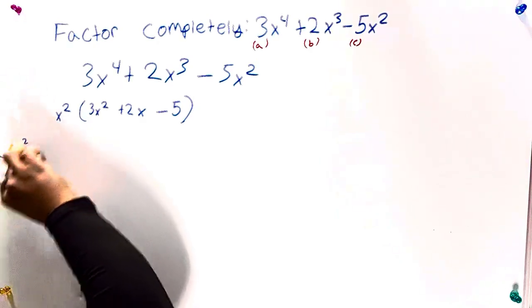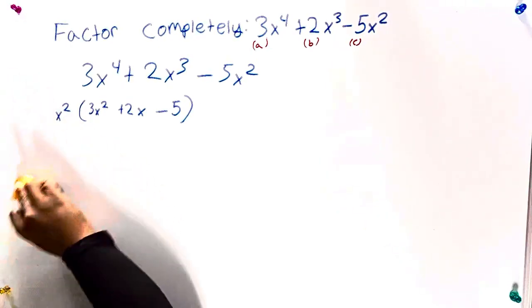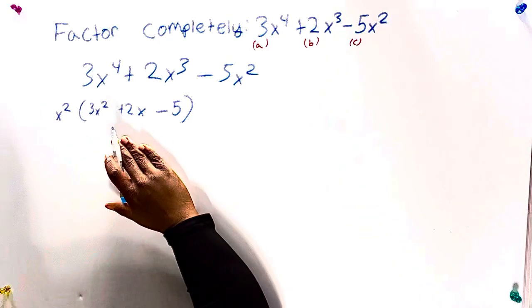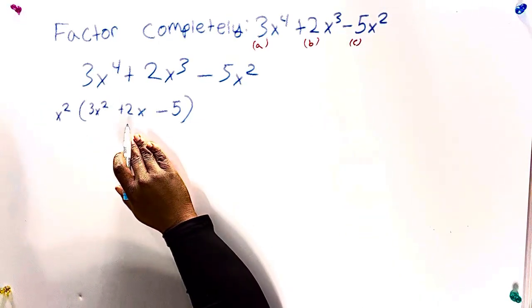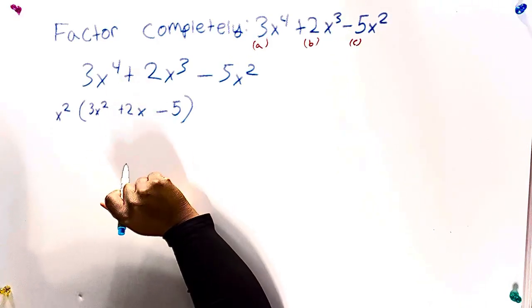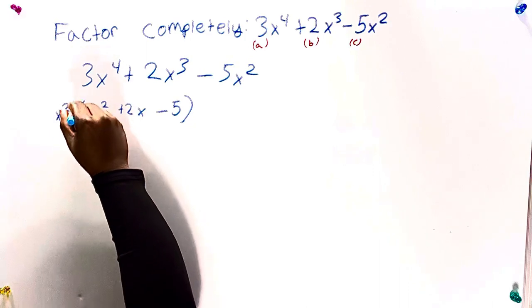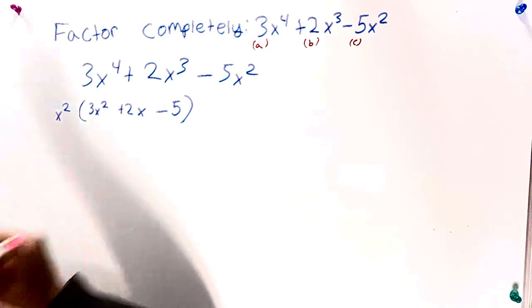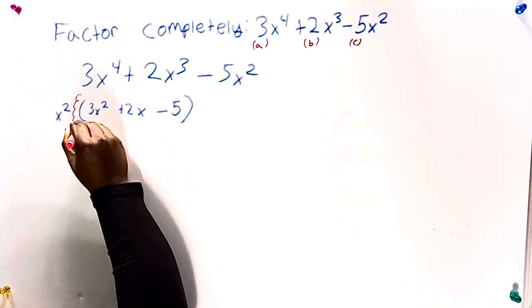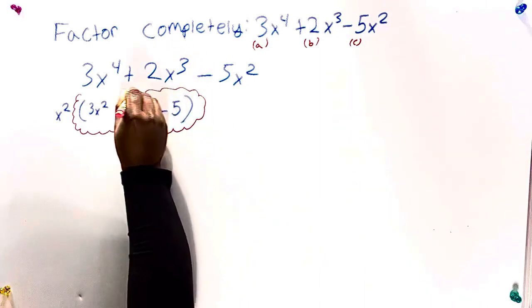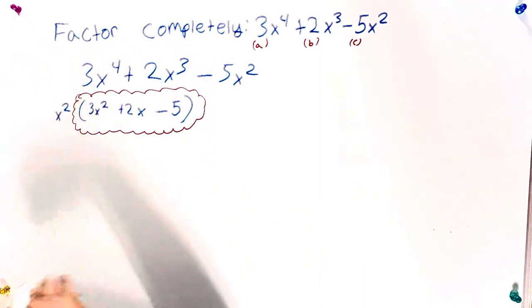x squared divided by x squared. Anything divided by itself is just 1. So we'll just leave it as negative 5. So then now we can break this up even further. Now we got to use this term called the AC method. We're only going to focus on this area. We're only going to focus on this area for right now. We'll bring the x squared later on.